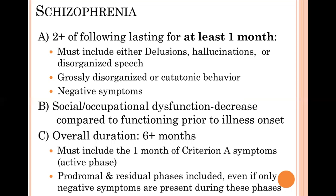There are, however, some essential features. When you hear about schizophrenia, you will often hear the phrase 'criterion A symptoms.' This is the point in time where they're having the active phase — delusions, hallucinations, and disorganized speech. They must have at least one of delusions, hallucinations, or disorganized speech, but they have to have at least two out of the entire set: delusions, hallucinations, disorganized speech, grossly disorganized or catatonic behavior, or negative symptoms.